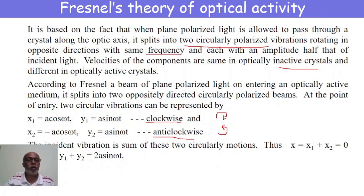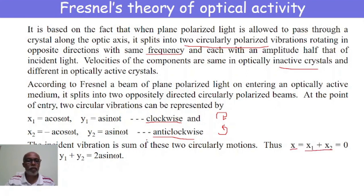When incident on an optically active medium, we get two circularly polarized lights, and the incident light is made up of these two. Therefore the incident vibration is x = x₁ + x₂, which gives zero, and y = y₁ + y₂ = 2a·sin(ωt). So x and y represent the incident vibration.